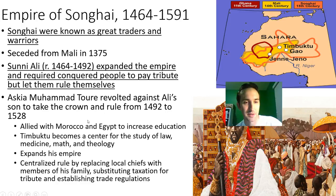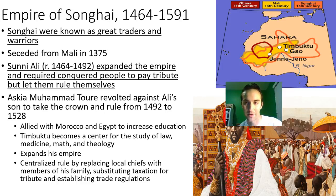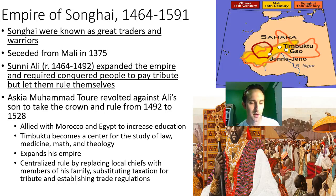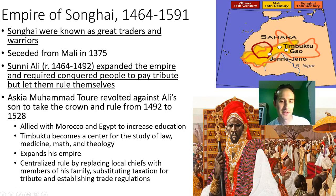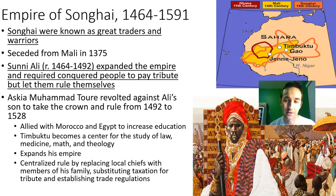Askia Muhammad Toure revolted against Ali's son and took over the crown from 1492 to 1528. He allied with Morocco and Egypt to have stronger trade partners, which allowed them to increase education. Timbuktu became the center for the study of law, medicine, math, and theology for Africa. He expanded his empire and centralized his rule by replacing local chiefs with members of his own family — putting a cousin in charge of a conquered village and asking for the occasional tribute. He also established trade regulations, taking a cut for his empire.